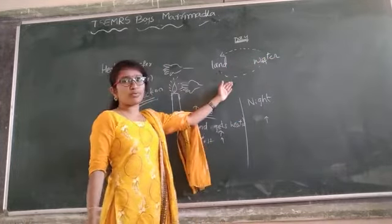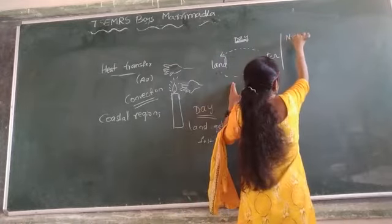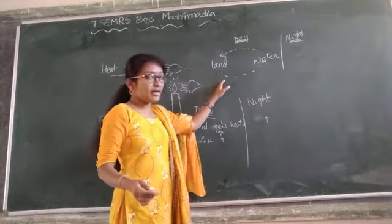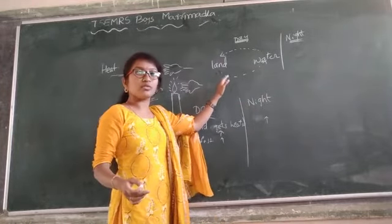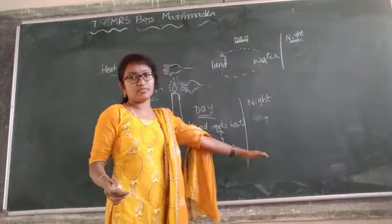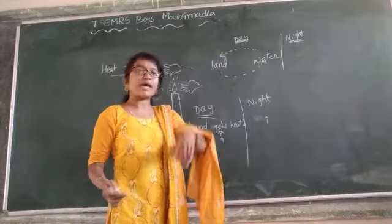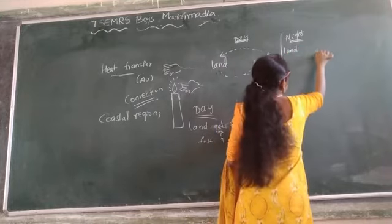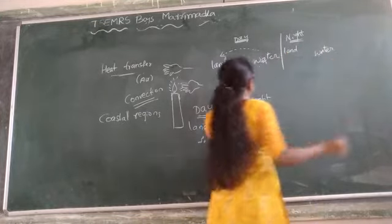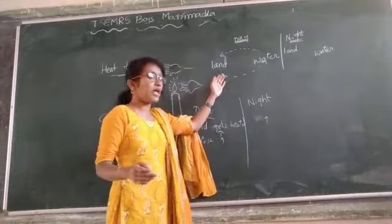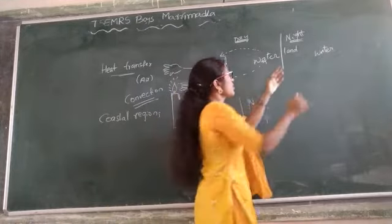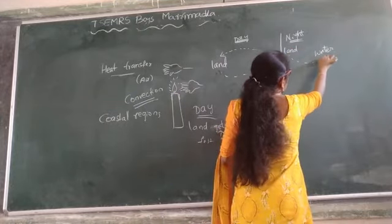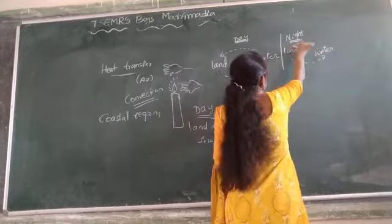Exactly the opposite happens during the nighttime. At nighttime, the land cools down fast. Land heats up fast and land also cools down fast. So here also the movement of air takes place — it goes to the water and comes back to the land.